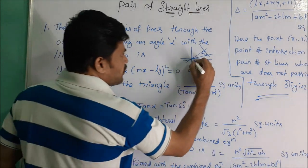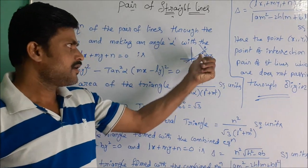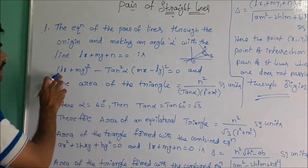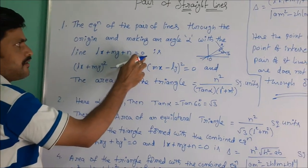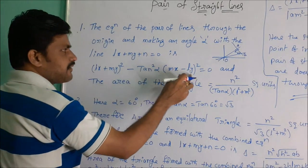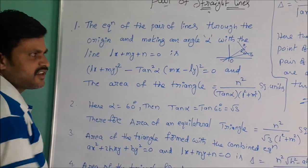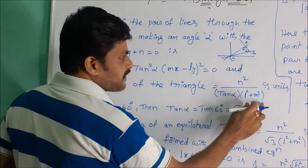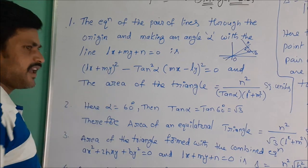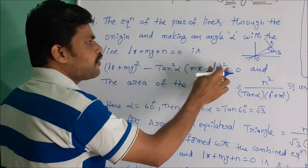We observe that OAB forms a triangle. To find the area of the triangle, we first find the equation of the pair of straight lines. Given the line lx + my + n = 0 and angle alpha, the combined equation is: (lx + my)² − tan²α · (mx − ly)² = 0. The area of the triangle formula is: n² / [tan α · (l² + m²)] square units.